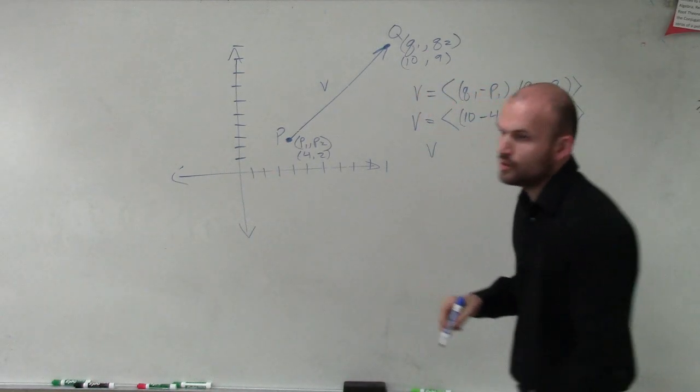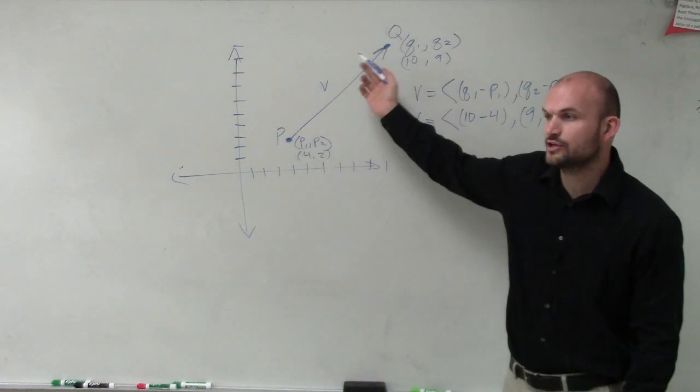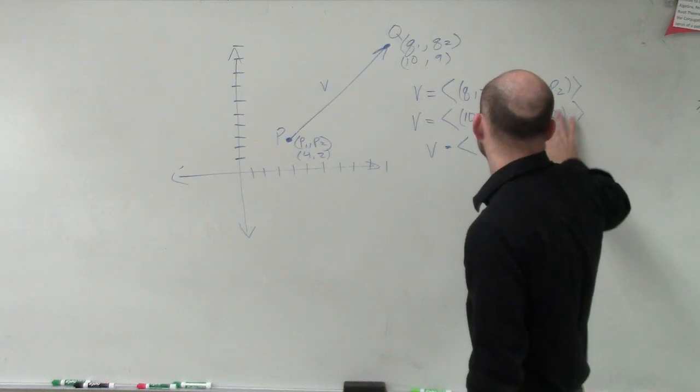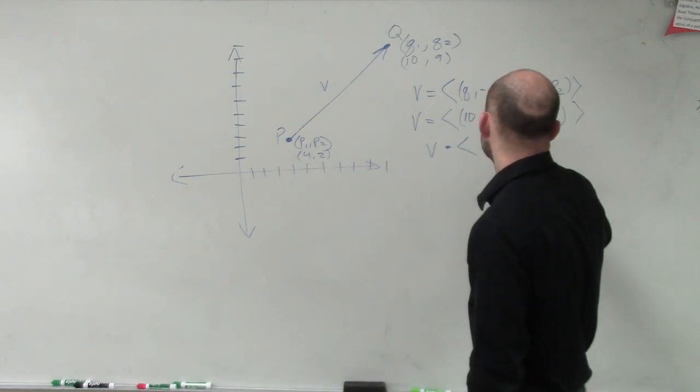Therefore, the component form of my directional segment p to q, which we're calling vector v, is now going to be 6 comma 7.